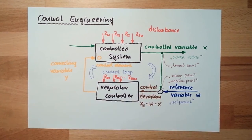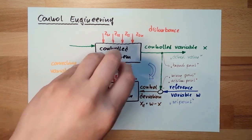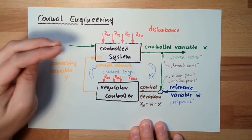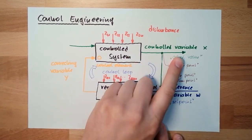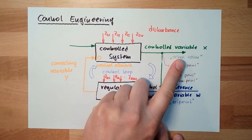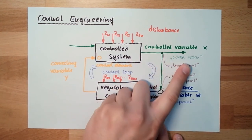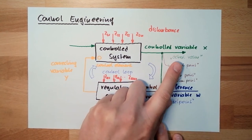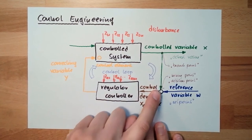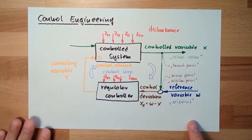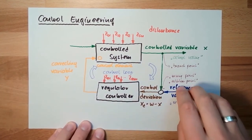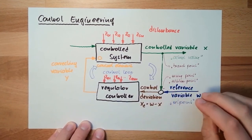Let's talk about an example. We want to control the velocity of our car, so our control system is the car. The control variable would be the velocity of the car. We have an actual value — the velocity we are driving right now. This is measured and compared to a setpoint, which I can set with my input. There's a reference variable here, which is usually constant.